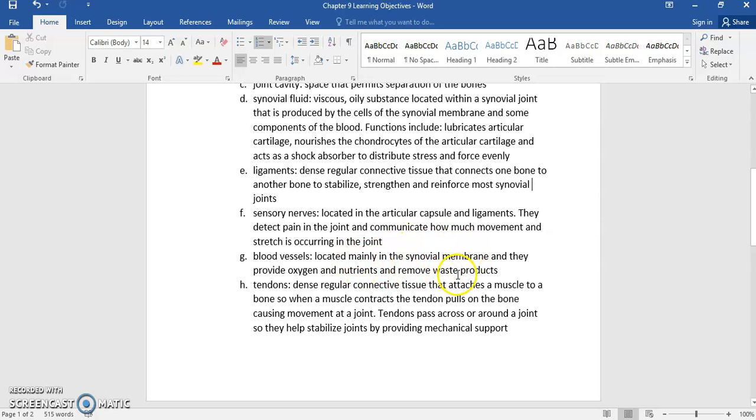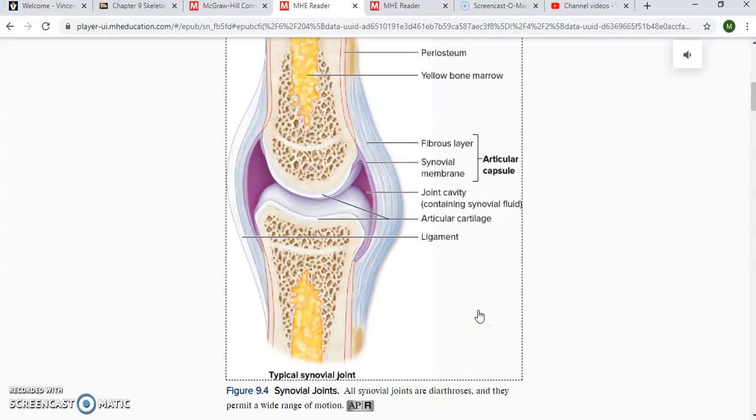So we would need blood vessels in that area. So that's mainly where they're located. And remember blood vessels are there just to bring nutrients and oxygen to various cells in the body, and then take away any waste products. So we do have that in our synovial membrane blood vessels. And again, they're not showing blood vessels on our pictures, but that's where they would be located.